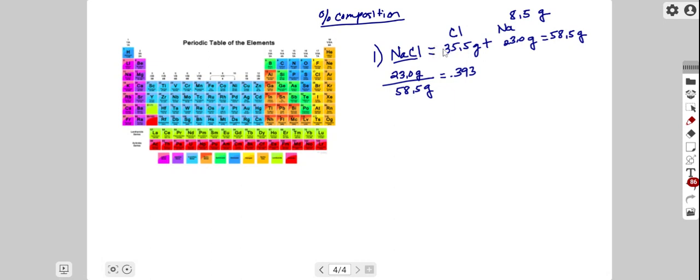We start by determining the overall molar mass or formula weight of sodium chloride. It contains one sodium atom and one chlorine atom. Using the periodic table, chlorine has a molar mass of 35.5 grams per mole and sodium 23.0 grams per mole. The overall formula mass is 58.5 grams per mole.